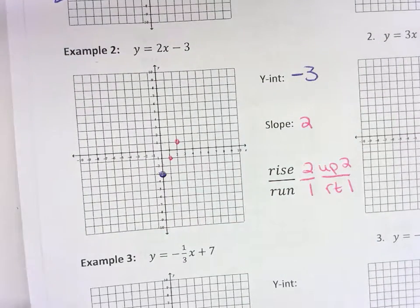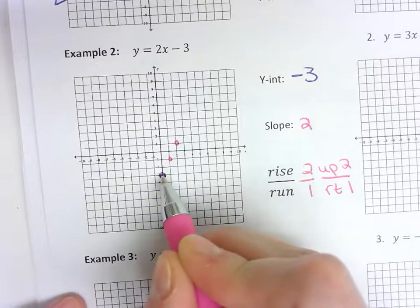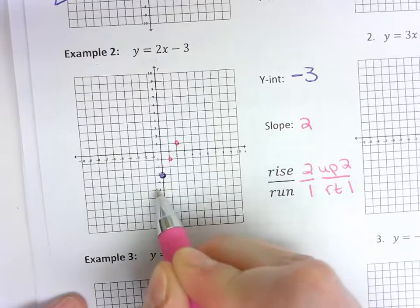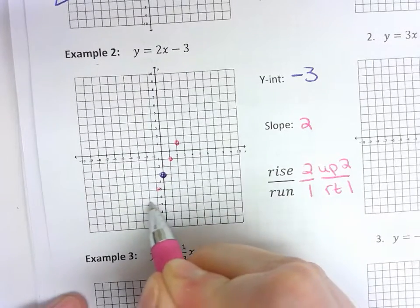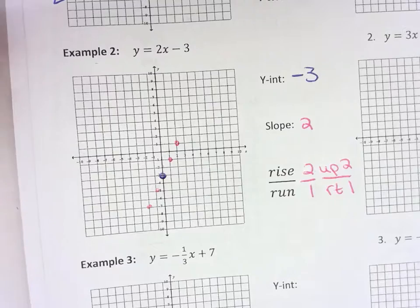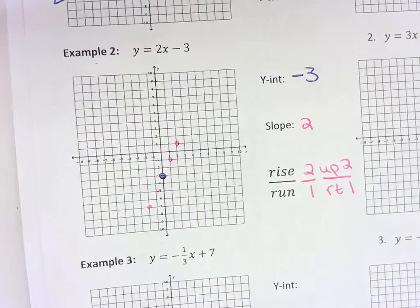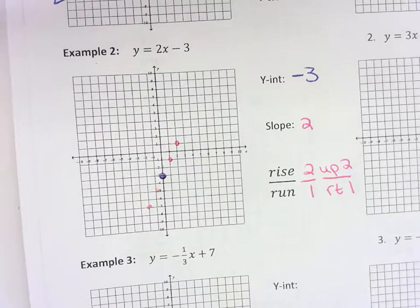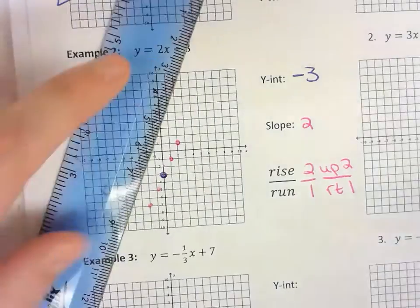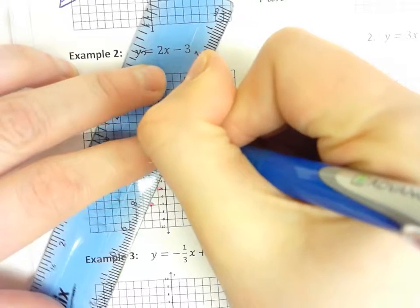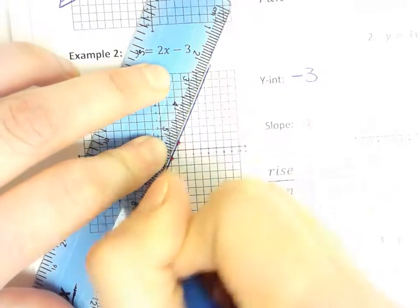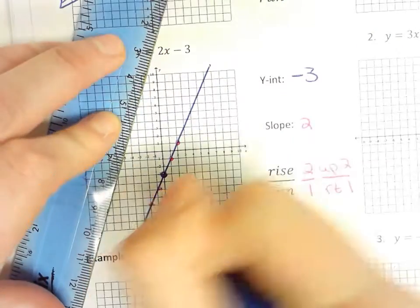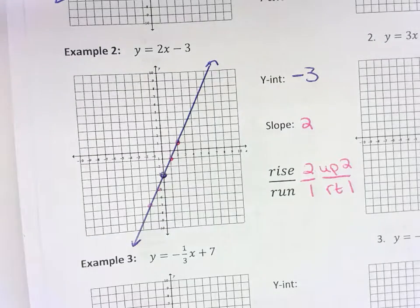To go the other way, do the exact opposite: down 2 and left 1. Down 2 and left 1. Once you've got your 5 points, if they fit on your graph, take your ruler and connect the points. Line them up perfectly, all the way through your graph. Arrows on both ends.